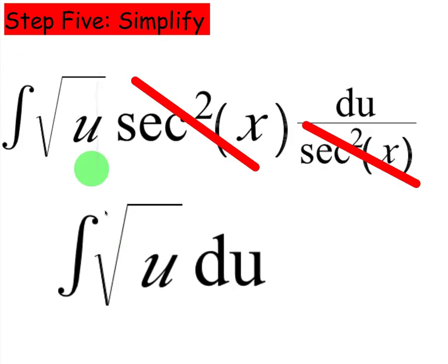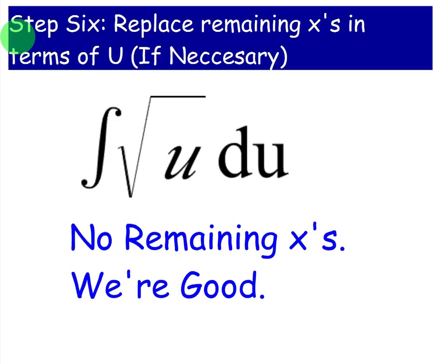So for step 5, once you simplify, you will see that this will be very easy to antidifferentiate, especially when you make this u to the 1 half. Step 6 and 7 will not be necessary because there are no x's in the antiderivative.